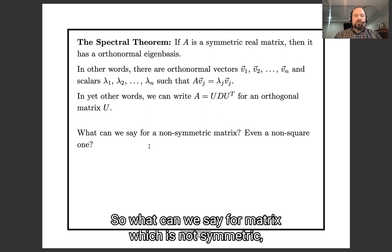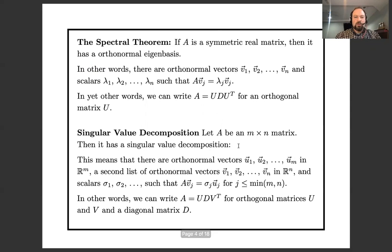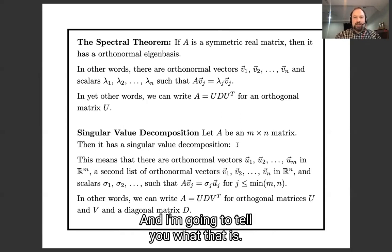Okay, so what can we say for a matrix which is not symmetric? Maybe it's not even square. Well the related statement is singular value decomposition. So this says if you have an m by n matrix that has a singular value decomposition, I'm going to tell you what that is.